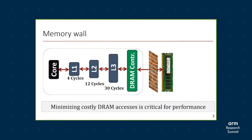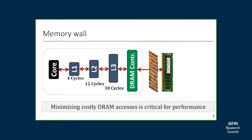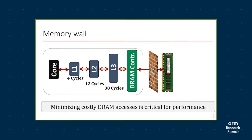What is the problem that we are trying to solve? The problem is pretty famous in the field of computer architecture — it's known as the memory wall problem. As you can see, the cache access latencies are in the tens of cycles but DRAM access latency is actually more than hundreds of cycles. So minimizing these costly DRAM accesses is critical for performance, and the goal is to hide these DRAM accesses as much as possible.